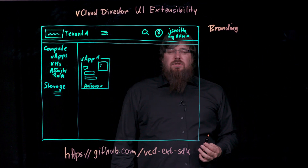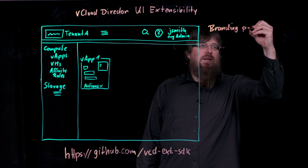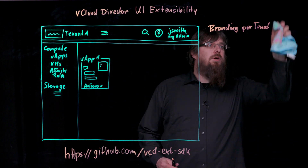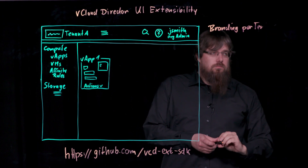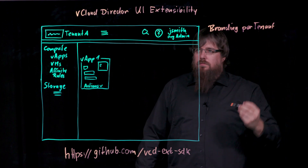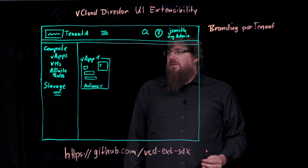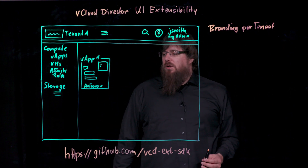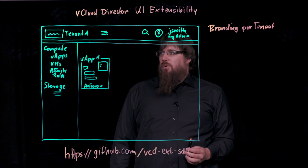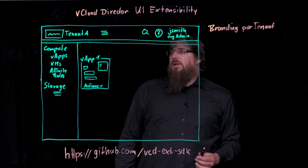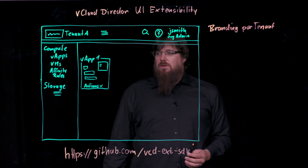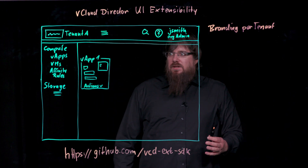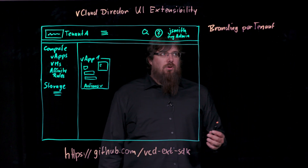With vCloud Director 9.7, branding is available on a per-tenant basis. The branding allows you to create your own cascading style sheets — CSS sheets — to customize the colors, icons, and look and feel of the vCloud Director UI on a per-tenant basis. So you can have the UI reflect the corporate design of your different tenants, and tenant A might look completely different than tenant B, which might again look completely different than all your other tenants.